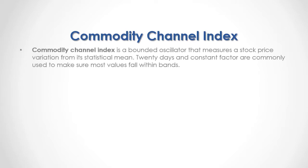The Commodity Channel Index is a bounded oscillator that measures a stock price variation from its statistical mean. 20 days and a constant factor are commonly used to make sure most values fall within the bands. Notice that these 20 days and constant factor are commonly used, but they are not fixed and can be modified according to your needs.